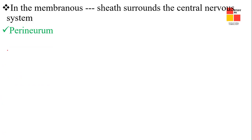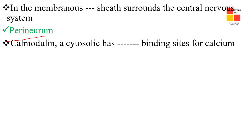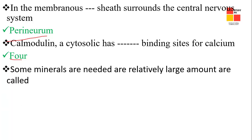Next one: calmodulin as a cytosolic protein has four binding sites for calcium. Next one: some minerals needed in relatively large amounts are called macrominerals.